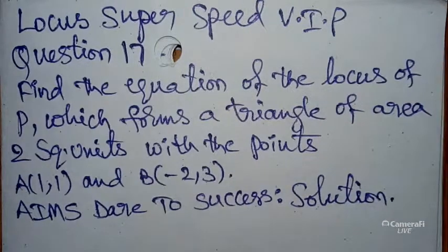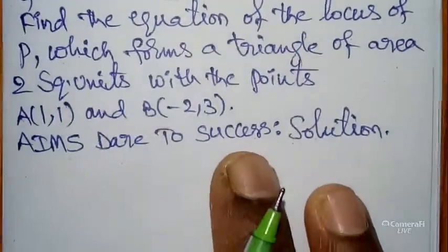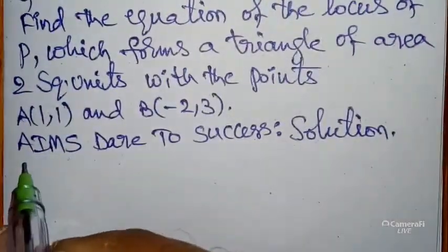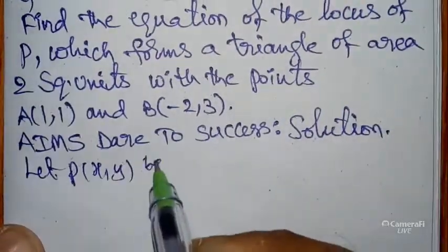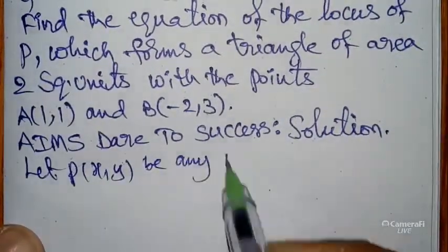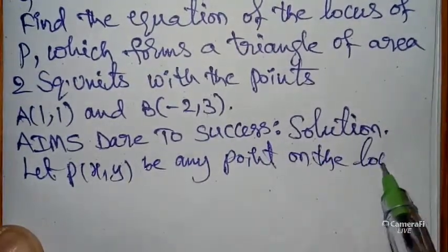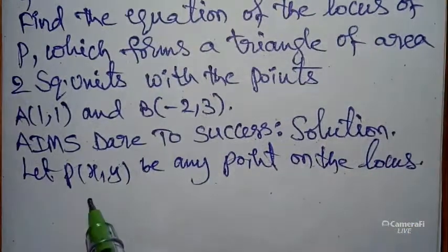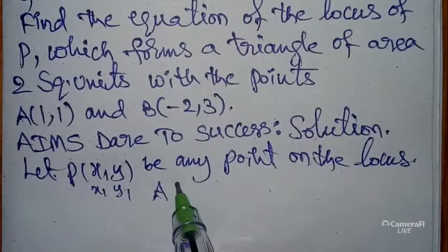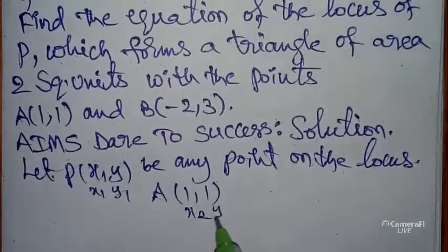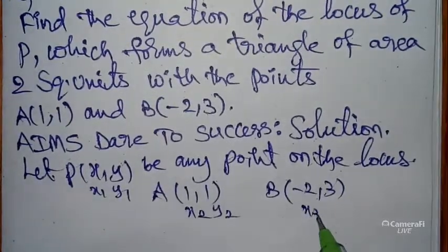Now I can start. The given is area of the triangle. First of all, let P(x,y) be any point on the locus. We can assume P(x,y), so let it be x₁,y₁. And A point is (1,1), it is x₂,y₂. And B(-2,3), it is x₃,y₃.